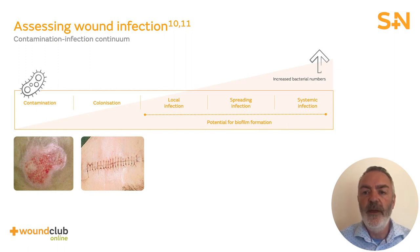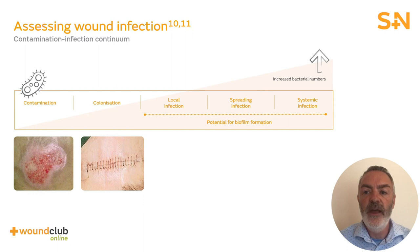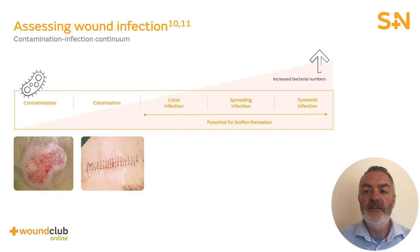Additionally, local infection is not dependent upon a specific bacterial quantity — i.e., 100,000 or 10 to the power of 5 colony-forming units. Spreading infections indicate that bacteria have moved into the peri-wound soft tissue, resulting in erythema and possible pain and oedema. Systemic infection occurs when bacteria enter the bloodstream. Whilst vigilance is important for any chronic wound, treatment is required for wounds with local, spreading, or systemic infection. Coming up, we will discuss assessment and management of each of these findings.